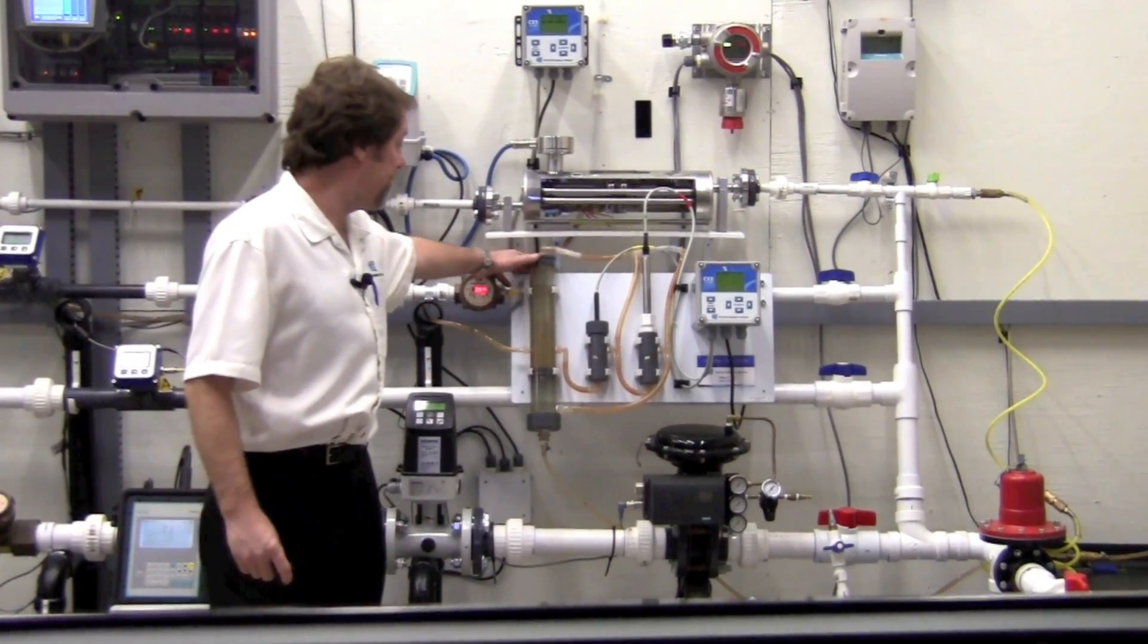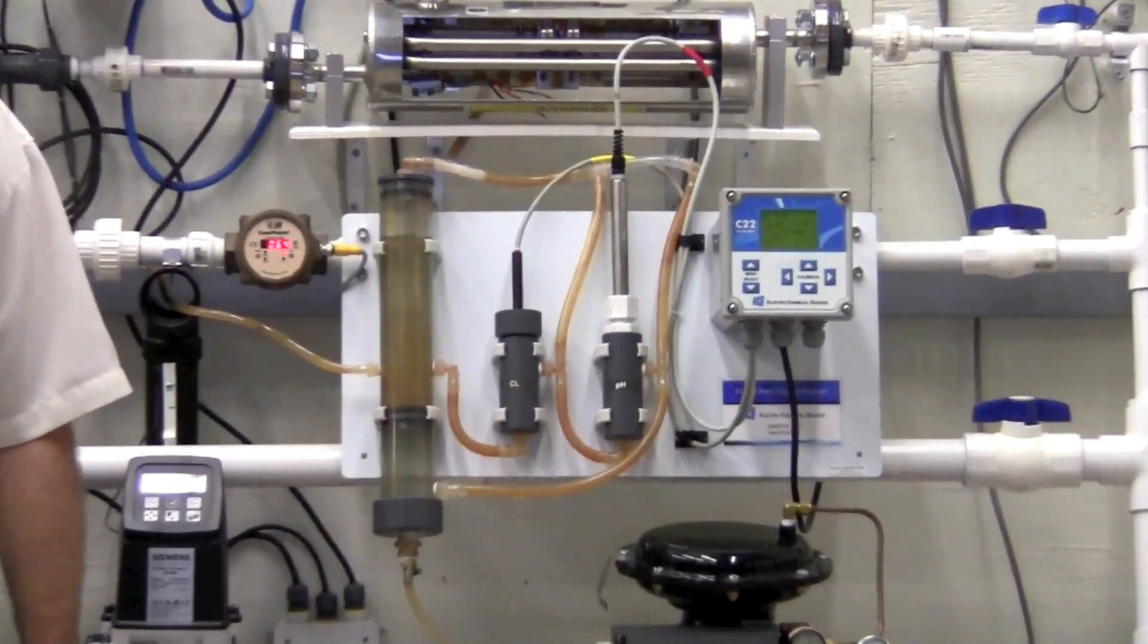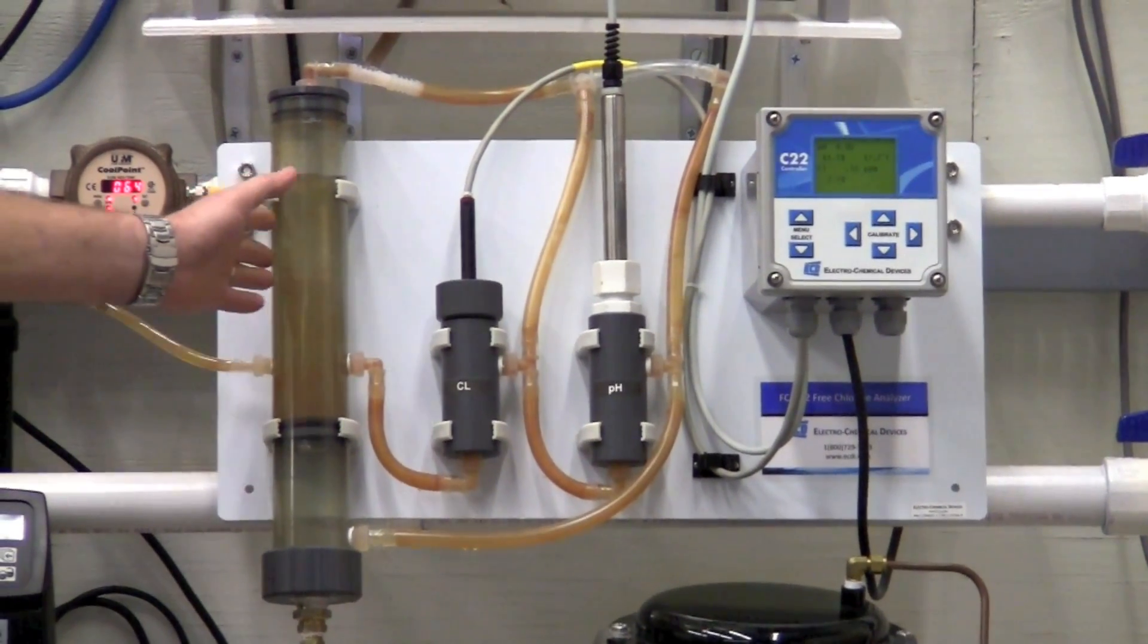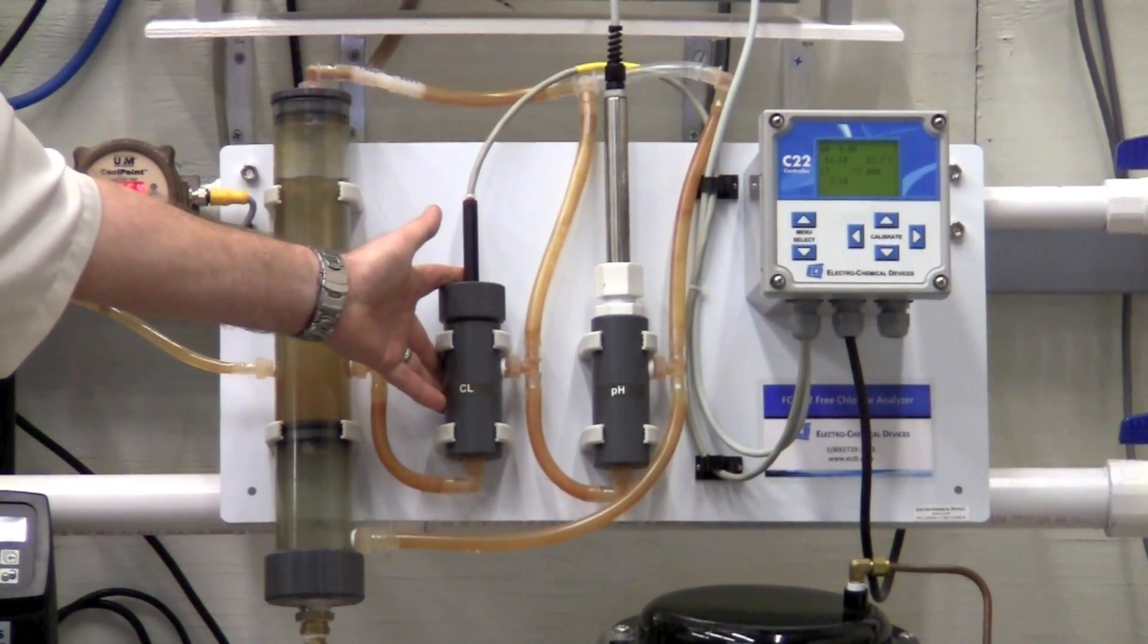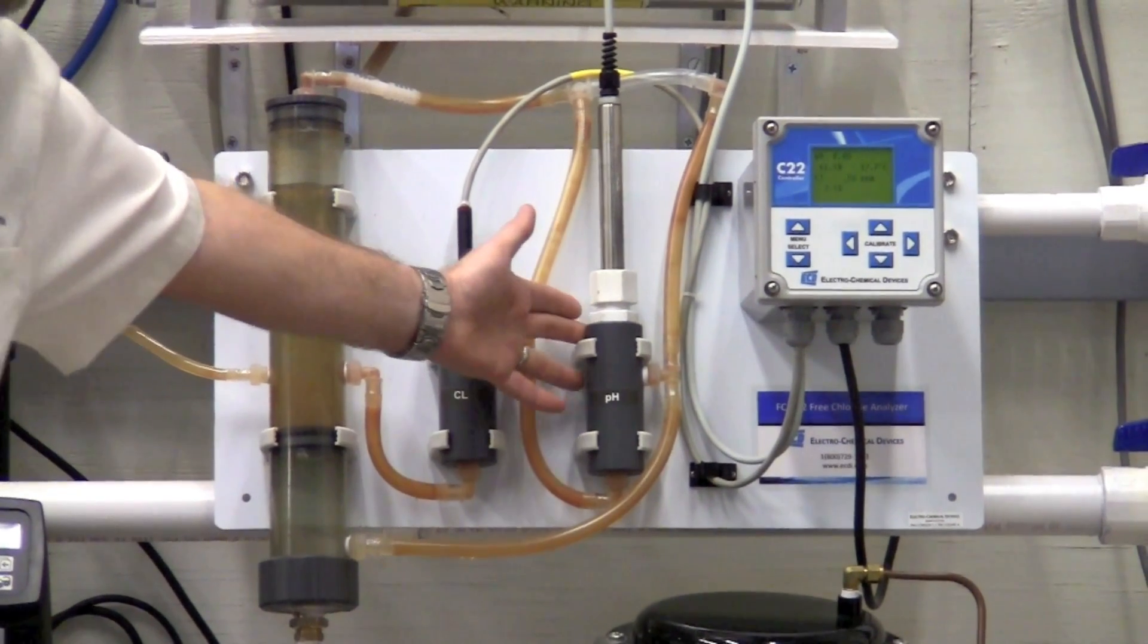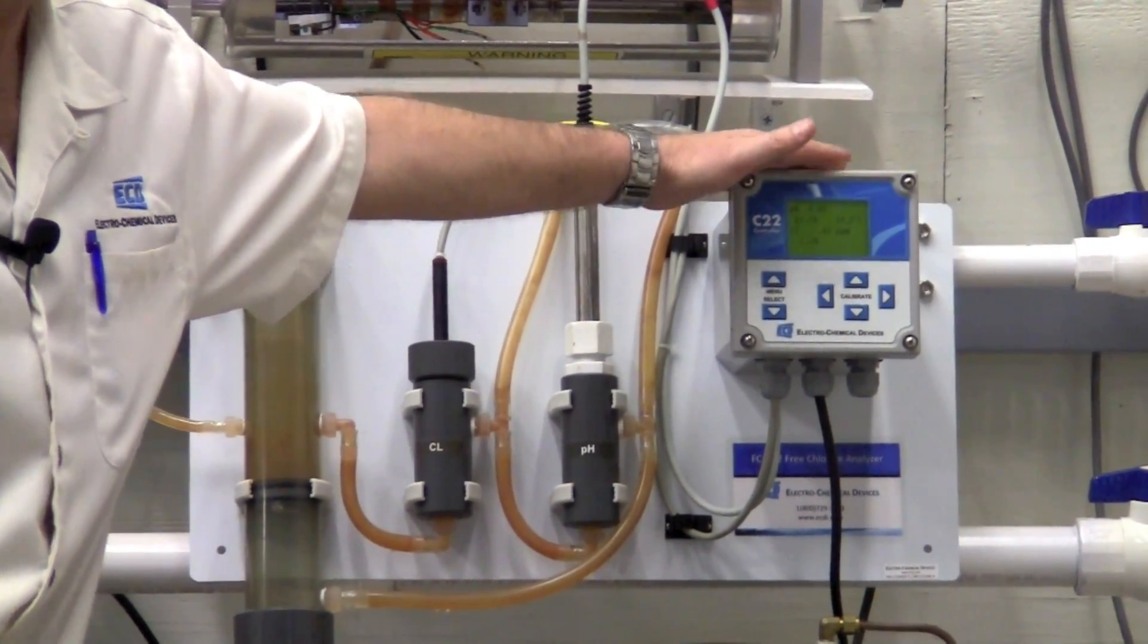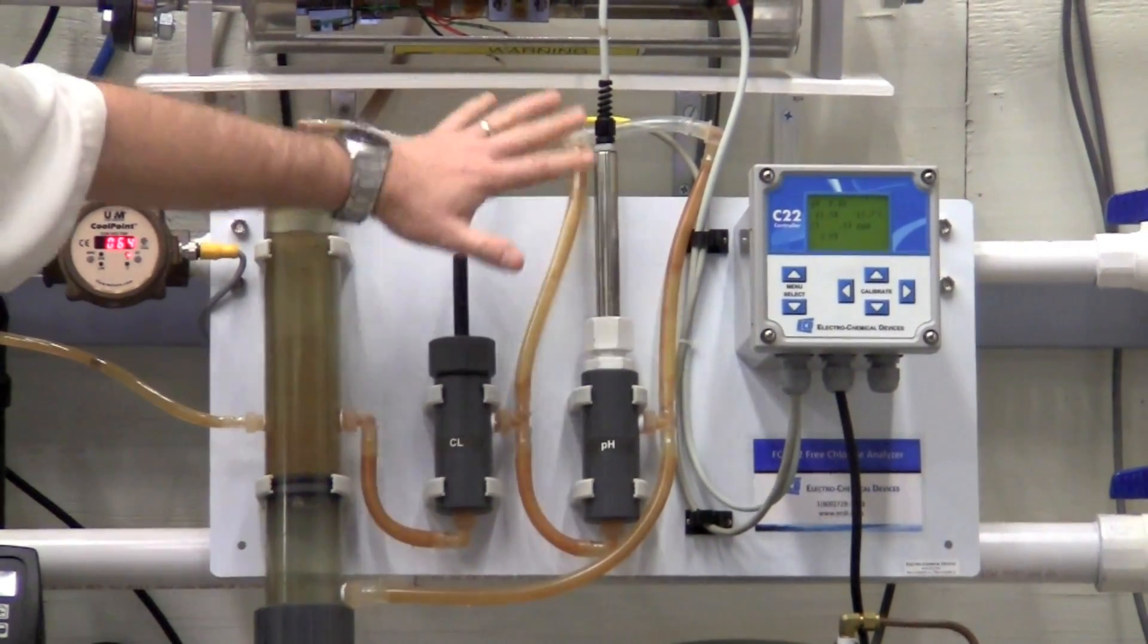Today we've got our FCA which is the free chlorine system here. The ECD chlorine system consists of a constant head flow controller, a chlorine sensor in a chlorine flow cell, the pH sensor in a pH sensor flow cell, and the system 22 controller, all mounted on a back panel plumbed and ready to go.